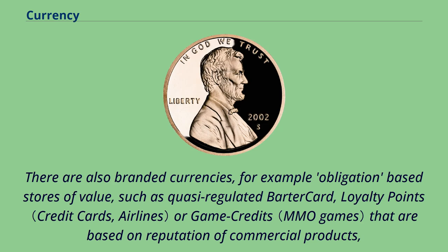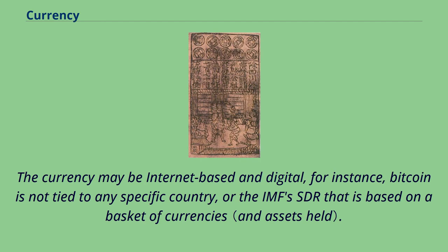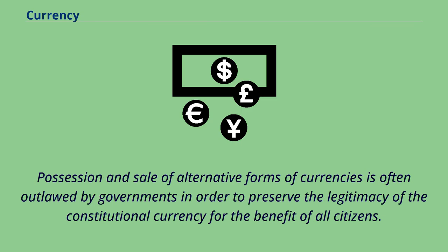There are also branded currencies, for example obligation-based stores of value such as quasi-regulated barter cards, loyalty points, or game credits that are based on the reputation of commercial products, or highly regulated asset-backed alternative currencies such as mobile money schemes like MESA. The currency may be internet-based and digital — for instance, Bitcoin is not tied to any specific country — or the IMF's SDR that is based on a basket of currencies. Possession and sale of alternative forms of currencies is often outlawed by governments in order to preserve the legitimacy of the constitutional currency for the benefit of all citizens.